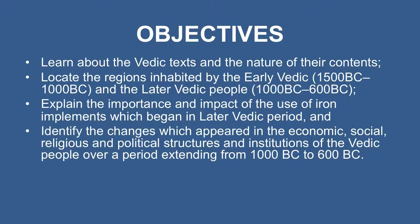The objectives of this program are to learn about the Vedic texts and the nature of their contents, locate the regions inhabited by the early Vedic and the later Vedic people, explain the importance and impact of the use of iron implements which began in the later Vedic period, and identify the changes which appeared in the economic, social, religious and political structures and institutions of the Vedic people over a period extending from 1000 BC to 600 BC.